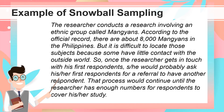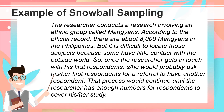An example of Snowball Sampling is as follows. The researcher conducts a study involving an ethnic group called Mangyans. According to official records, there are about 8,000 Mangyans in the Philippines, but it is difficult to locate those subjects because some have little contact with the outside world. So once the researcher gets in touch with his or her first respondent, she would probably ask that respondent for a referral to have another respondent. That process would continue until the researcher has enough respondents to cover his or her study.